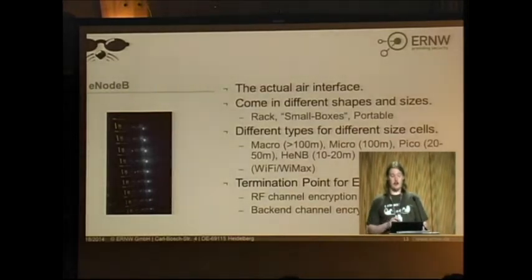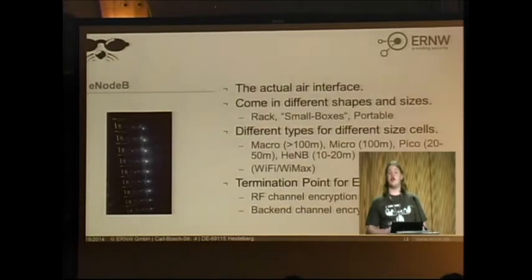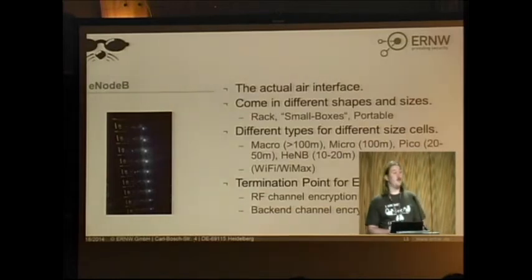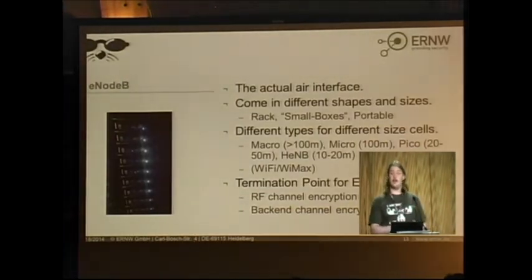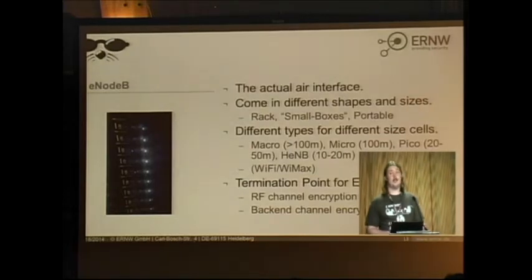The most important thing about an eNodeB is that it sits somewhere out in the field. It is the point where all encryption coming from the UE terminates on one side, and all encryption from the backend terminates on the other side. So if you get access to an eNodeB, everybody using it is yours.